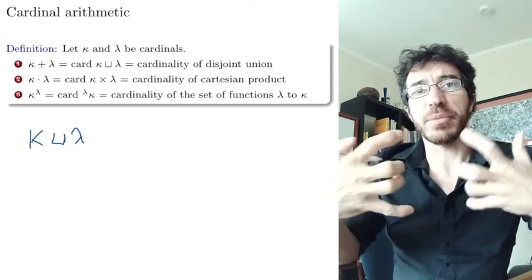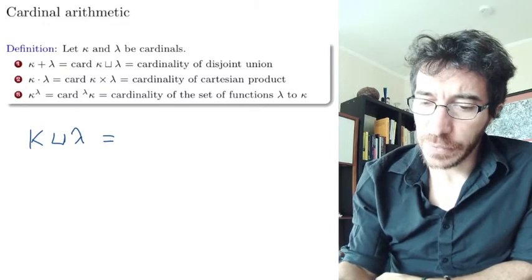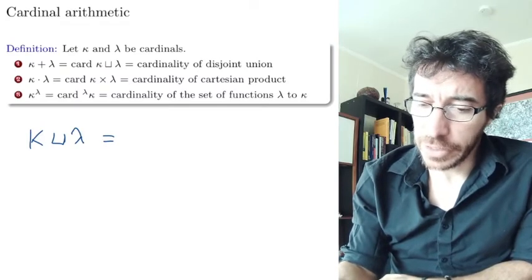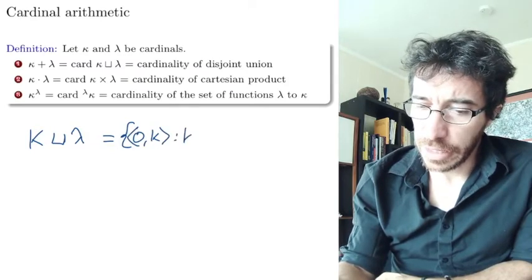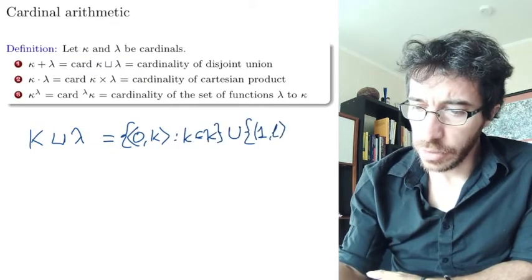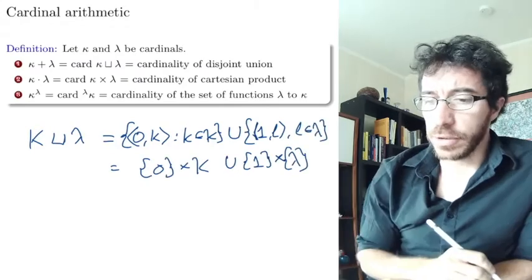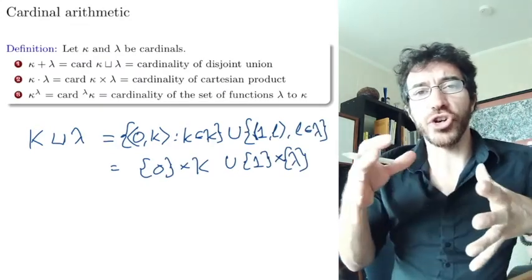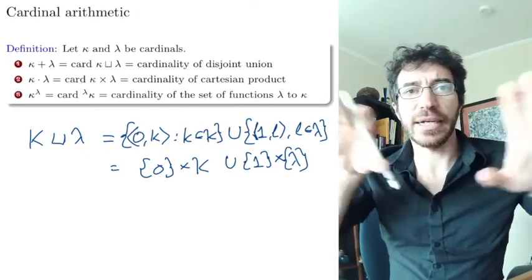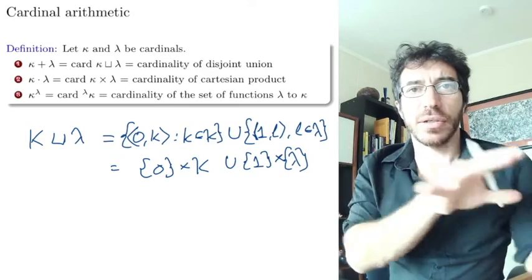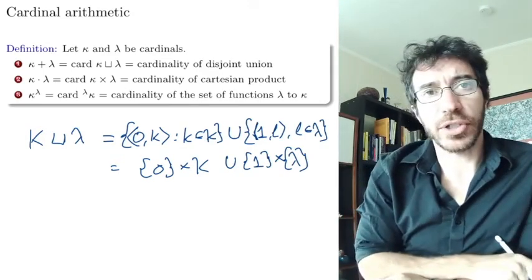We don't want them to overlap. So essentially, usually what you do is you take all the pairs of the form (0, k) for k in kappa, and union with the pairs (1, l) for l in lambda. So we force them to be disjoint by multiplying by 0 and 1, and now we have two disjoint sets. The ones that start with 0 correspond to kappa, the ones that start with 1 correspond to lambda.